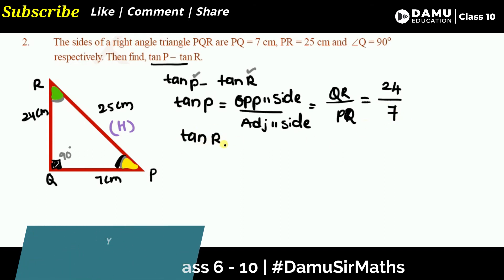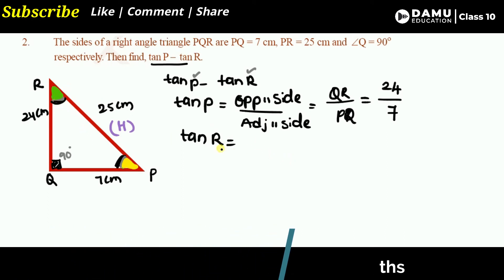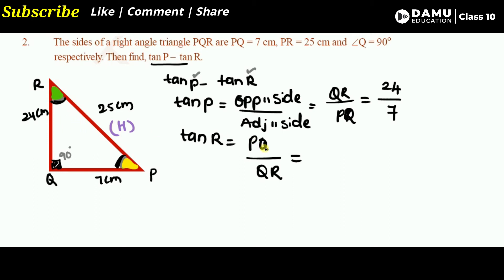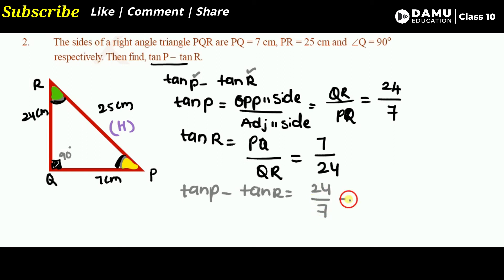For tan R, using the same formula: the opposite side to angle R is PQ, and the adjacent side is QR. So tan R equals PQ divided by QR, which is 7 by 24. Now for tan P minus tan R: 24 by 7 minus 7 by 24. Taking LCM, which is 24 into 7 equals 168.